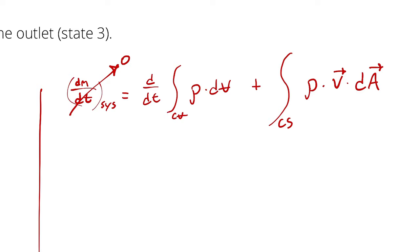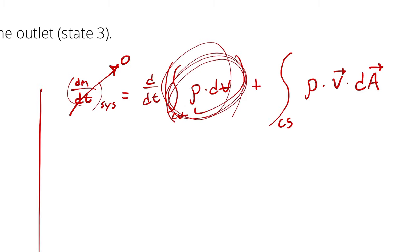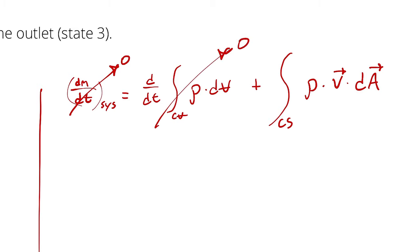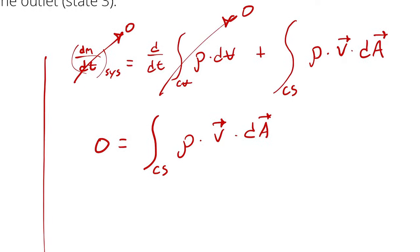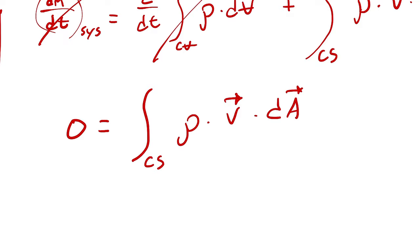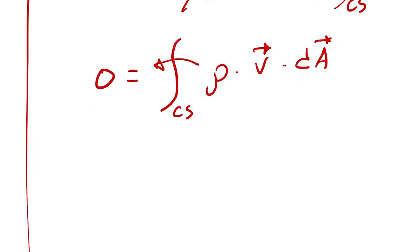Because it's steady, nothing can change with respect to time, including that entire quantity — that's d of that with respect to time — so it is also 0. This gives: 0 = ∫(CS) ρ(V⃗ · dA⃗). Then I recognize incompressible flow, so I bring out density and divide both sides by it, leaving: 0 = ∫(CS) V⃗ · dA⃗.